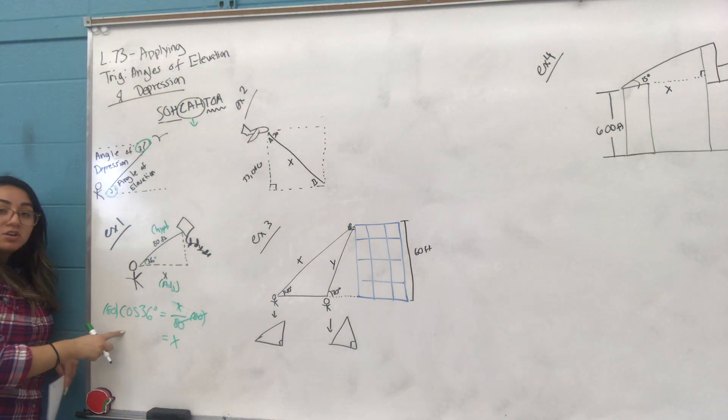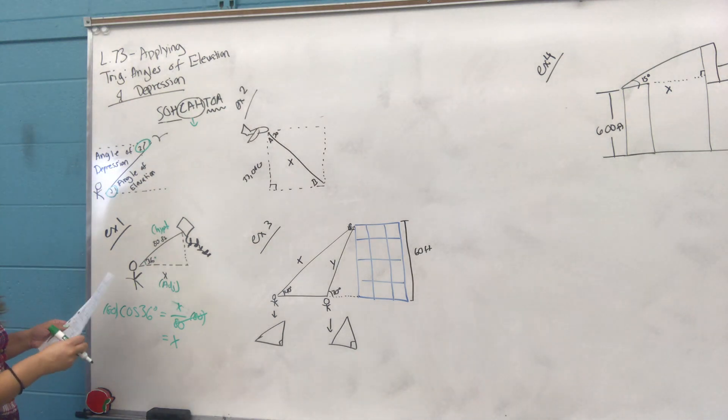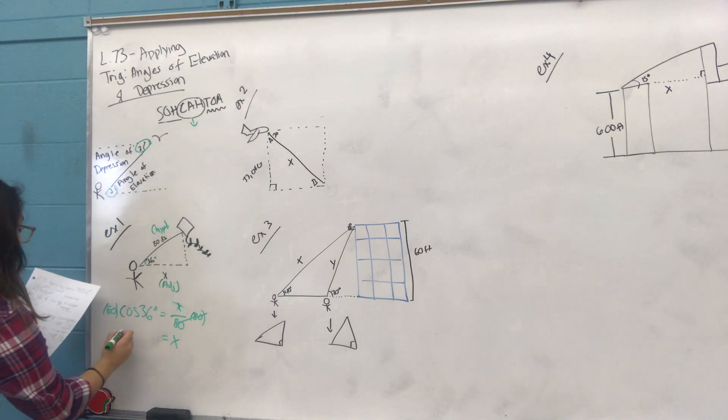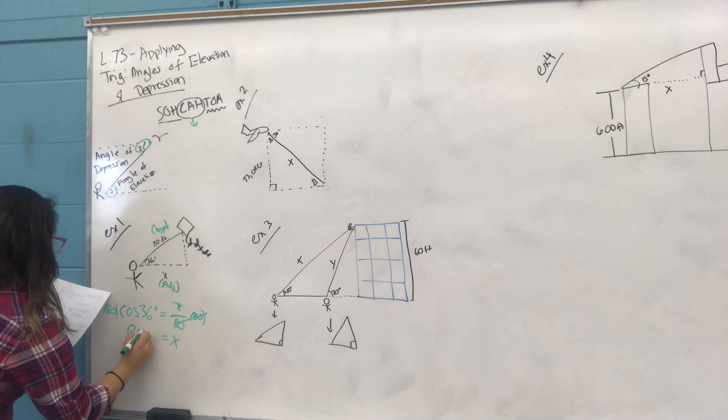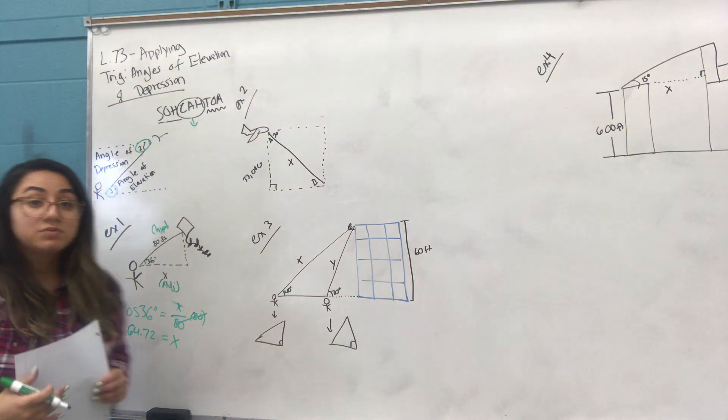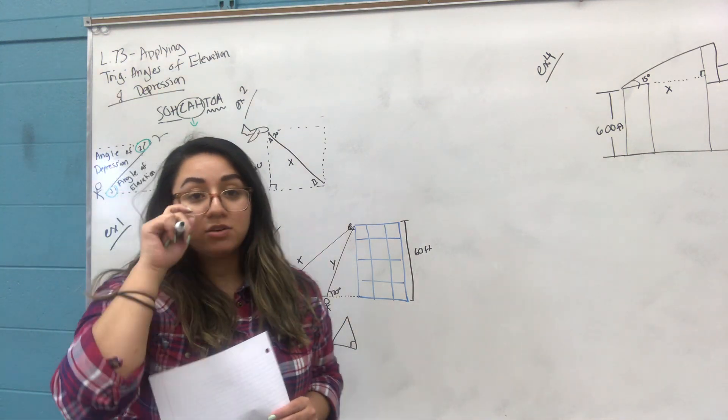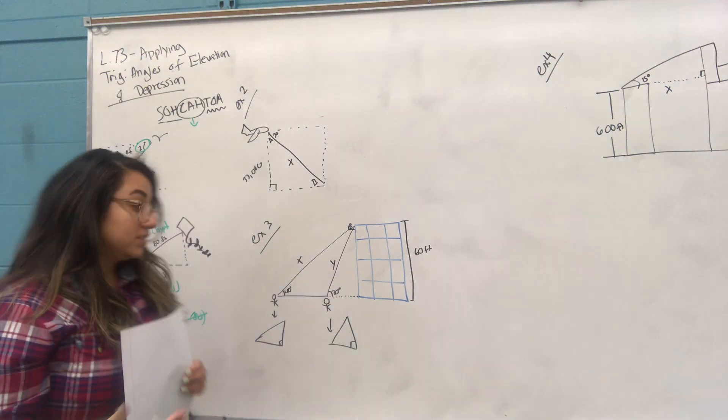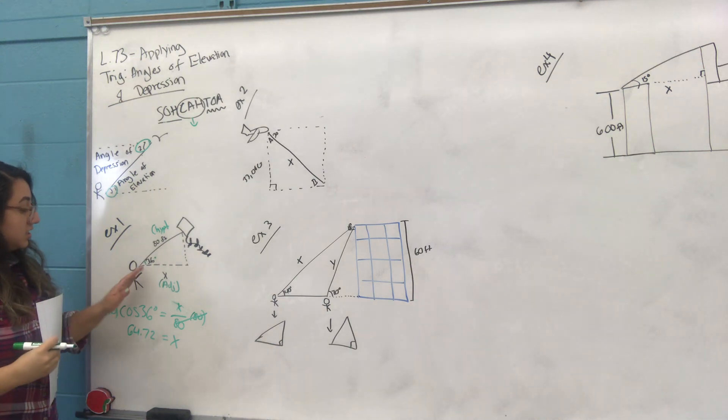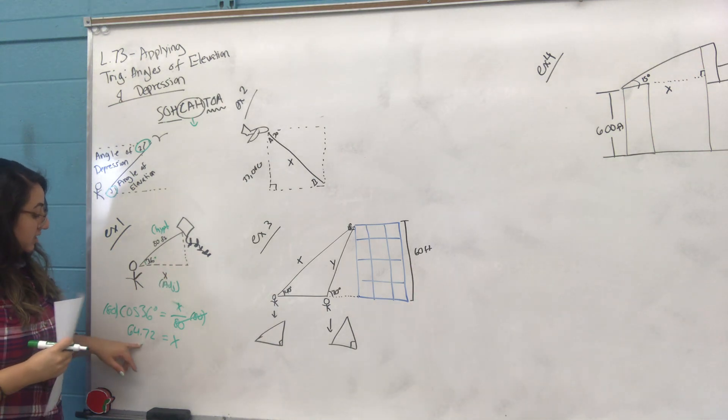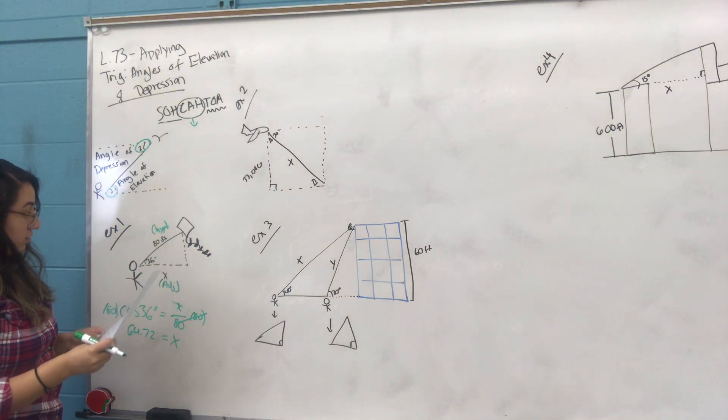If you do 80 times cosine of 36 in your calculator, and they're going to ask you to round to the tens or hundreds, you'll end up with 64.72. You can also use your phone, which has sine, cosine, and tangent options too. The distance from him to the kite is 64.72 feet.